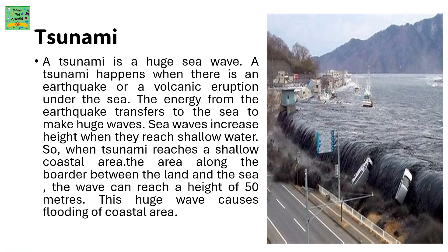A tsunami is a huge sea wave. A tsunami happens when there is an earthquake or volcanic eruption under the sea. The energy from the earthquake transfers to the sea to make huge waves. Sea waves increase in height when they reach shallow water, so when a tsunami reaches a shallow coastline — the area along the border between the land and the sea — the wave can reach a height of 50 meters. This huge wave causes flooding of coastal areas.